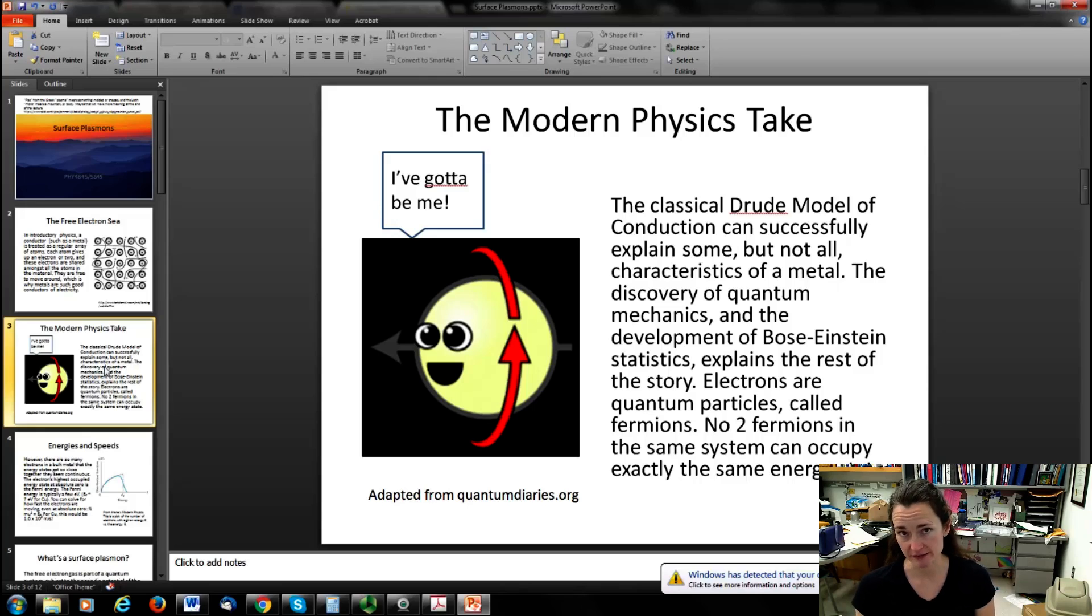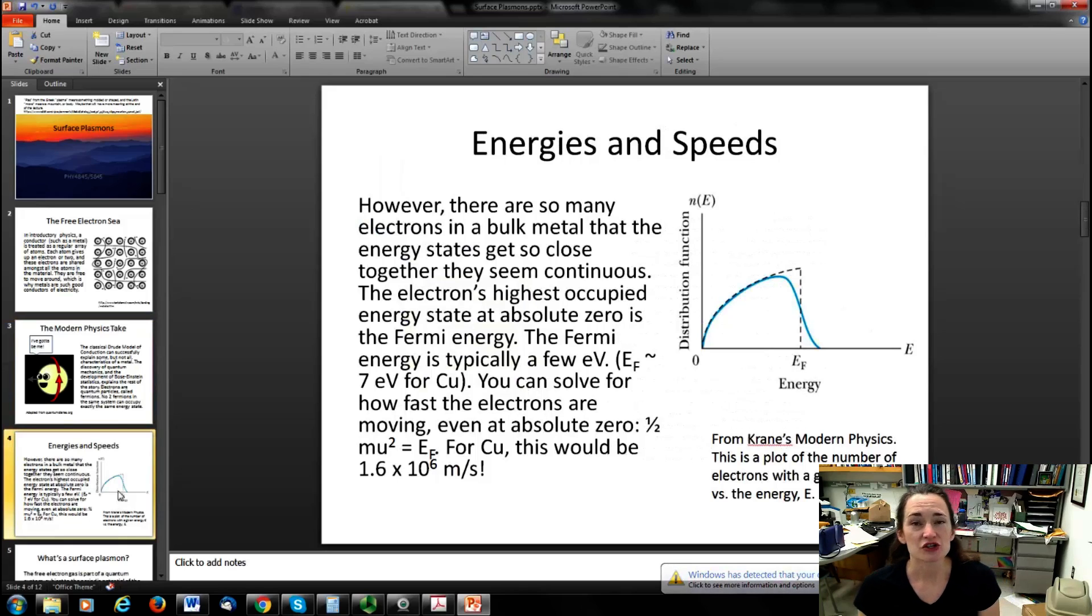Since electrons are actually quantum particles, the Drude model of conduction isn't the end-all be-all with respect to how a conductor behaves. There's a whole set of statistics known as Bose-Einstein statistics that explain sort of the rest of the story. I'm not going to go into all of that here, but suffice it to say that electrons are quantum particles called fermions. And fermions can't occupy exactly the same quantum state if they're in the same system. So specifically what that would mean, for example, in a hydrogen atom, is that there's four quantum numbers for each electron. There's an energy level n, the orbital quantum number l, the magnetic quantum number m sub l, and then the spin quantum number m sub s. So for the same atom, no two electrons within that atom can have the same set of quantum numbers.